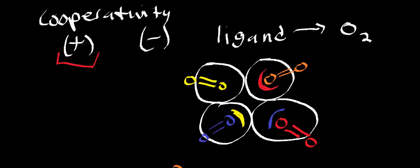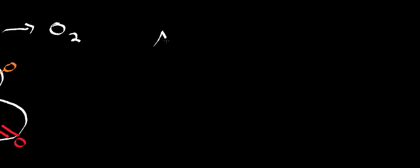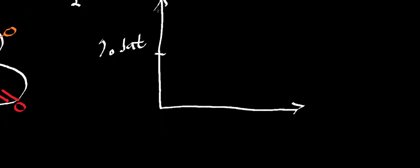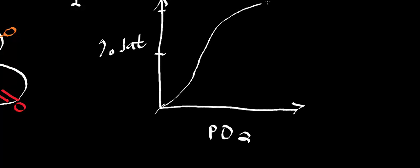What you'll typically see with hemoglobin is a sigmoidal saturation curve — percent saturation of oxygen. We draw an axis with percent saturation on the y-axis (0, 50, 100) and partial pressure of oxygen on the x-axis. The curve resembles an S shape — a sigmoidal curve. We actually have multiple curves, each representing a different pH.